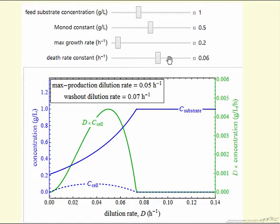We can change the substrate feed concentration. We can change one of the constants in the kinetic expression for cell growth. This is essentially the other constant, the maximum growth rate. And we can also change the cell death rate.